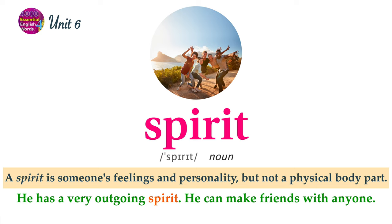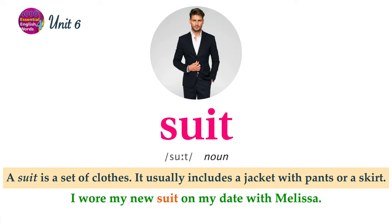A spirit is someone's feelings and personality, but not a physical body part. He has a very outgoing spirit. He can make friends with anyone. A suit is a set of clothes. It usually includes a jacket with pants or a skirt. I wore my new suit on my date with Melissa.